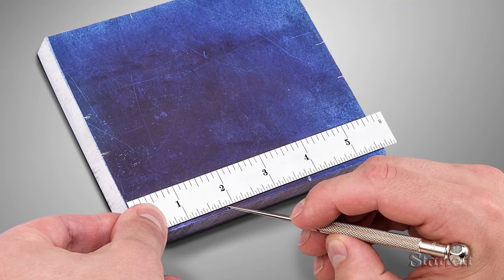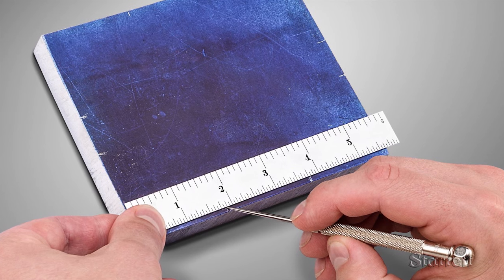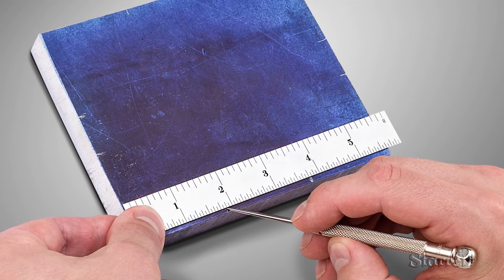This aluminum block is being prepped for a machining center, but first we are going to lay out angles and cut off corners to shorten the cycle time.